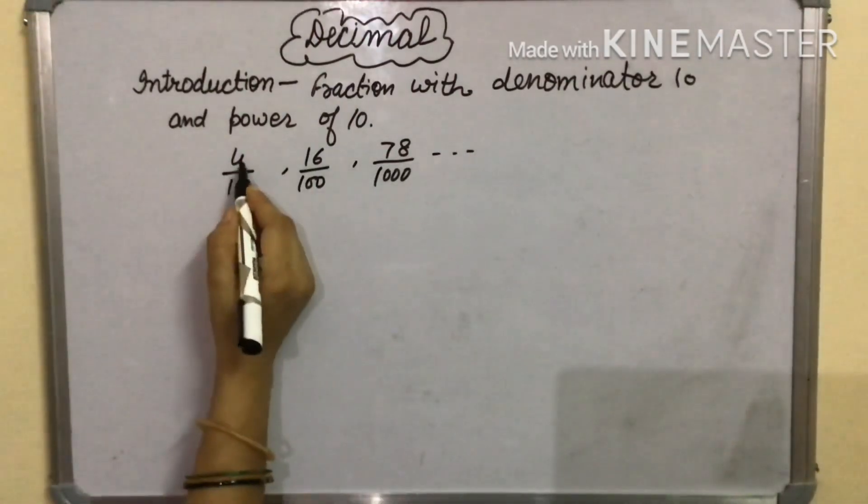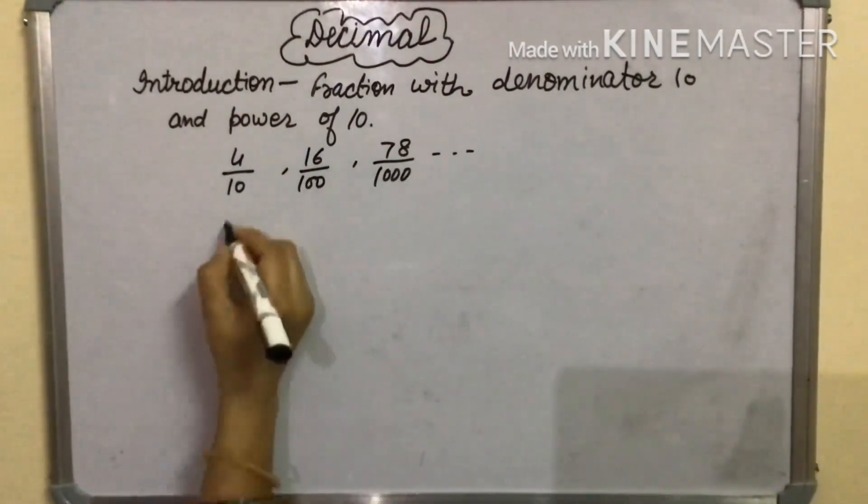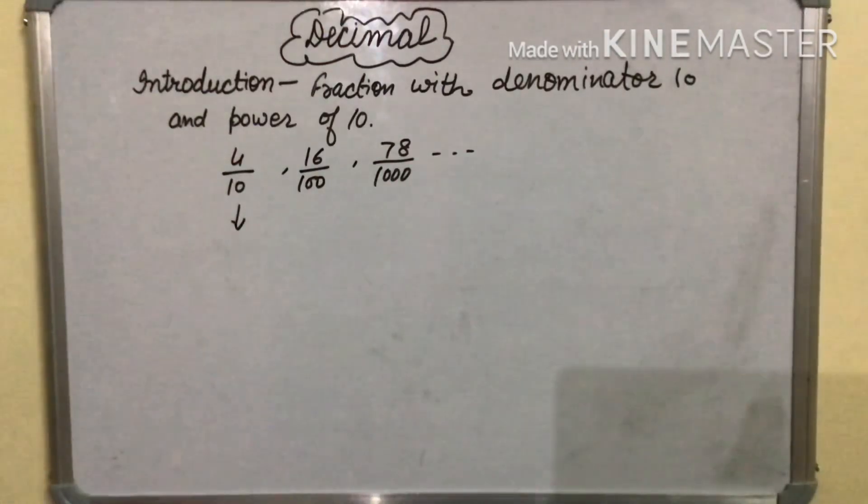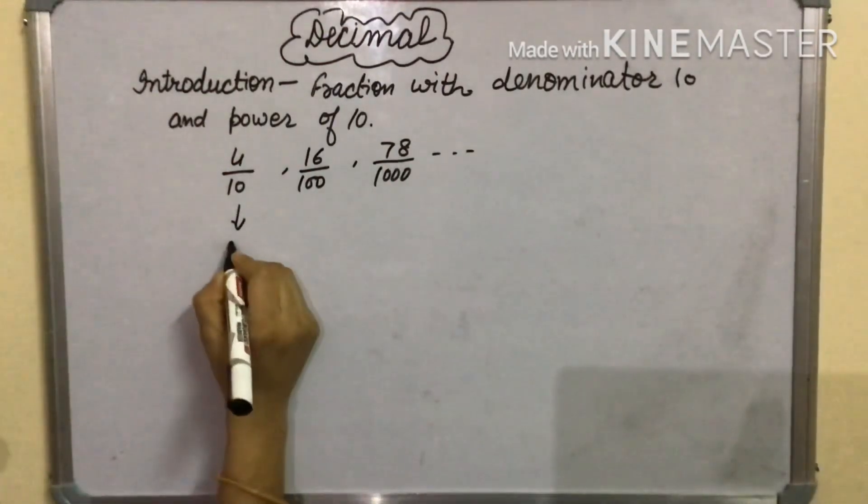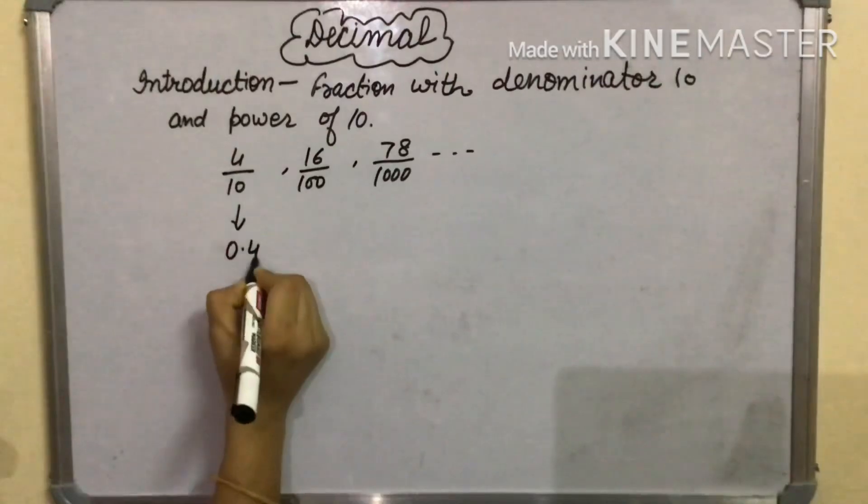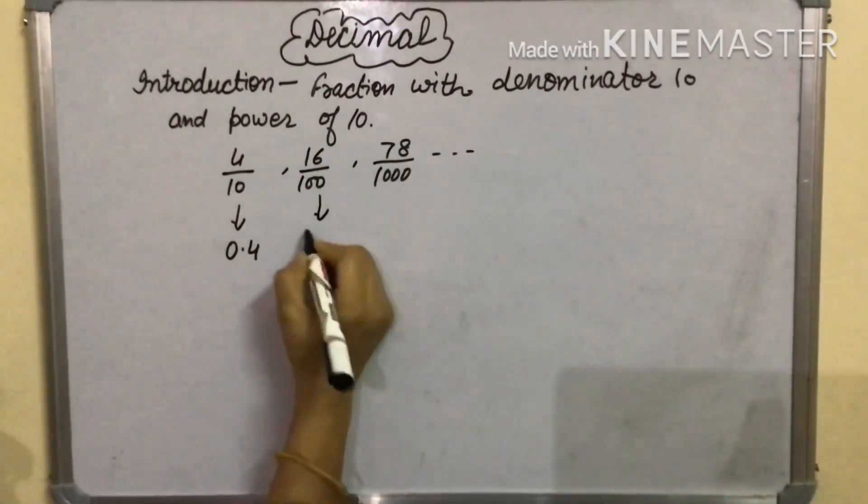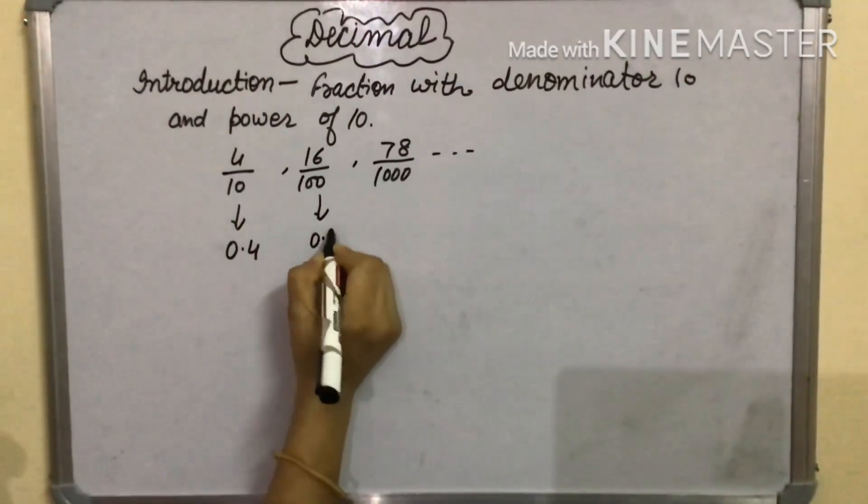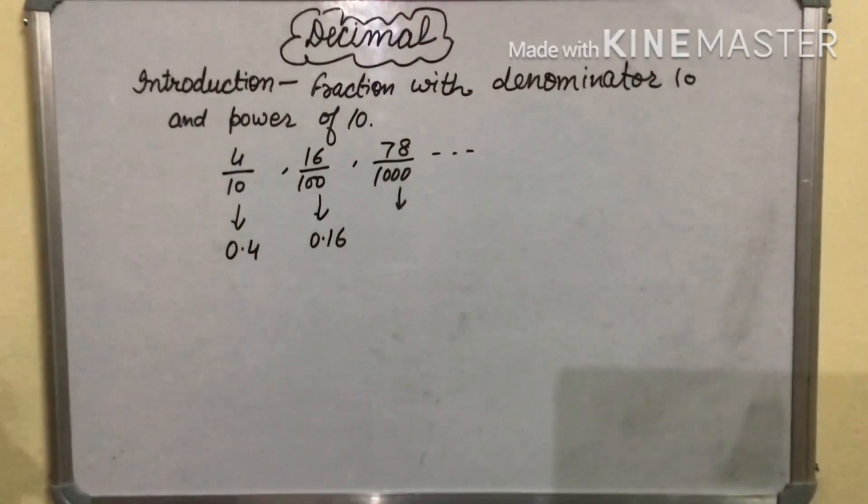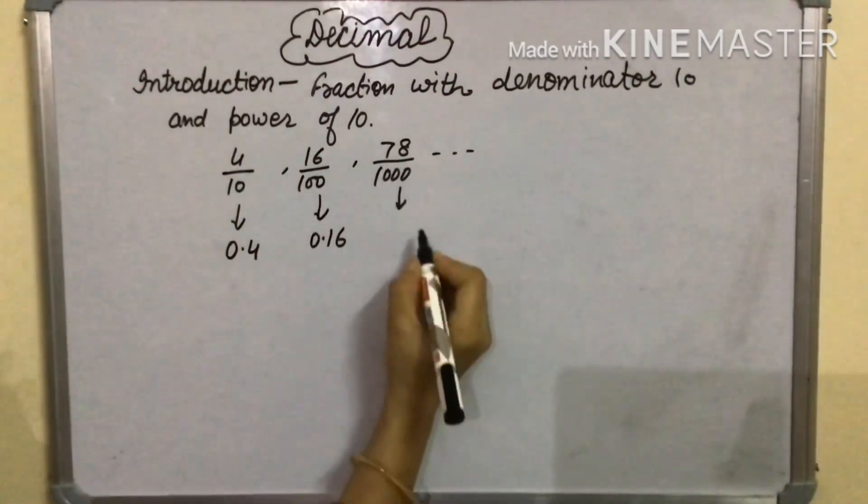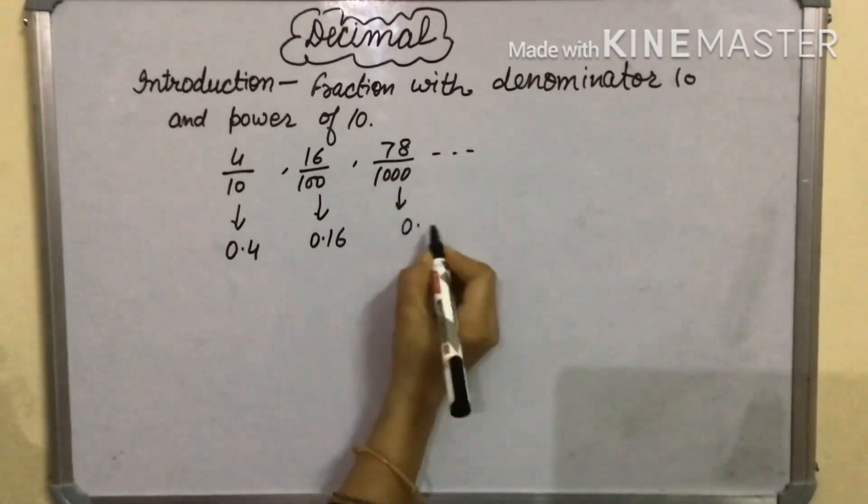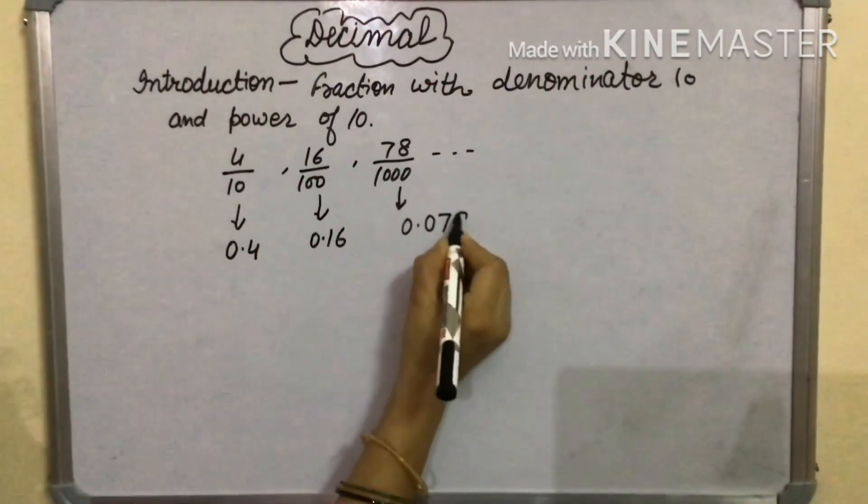Now you can write this fraction into decimal. If we divide 4 by 10, then we get 0.4. If we divide 16 by 100, then we get 0.16. If we divide 78 by 1000, then we get 0.078.